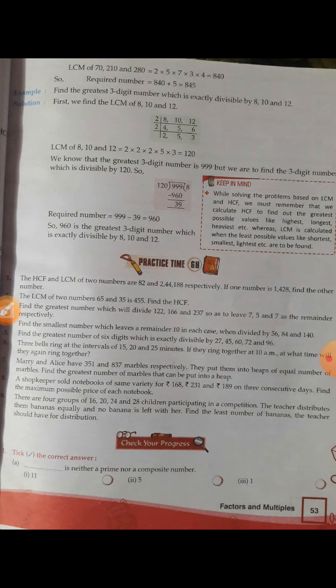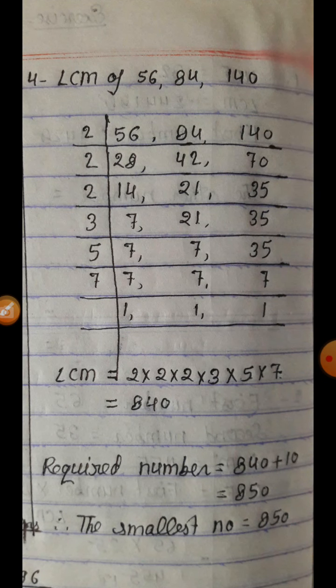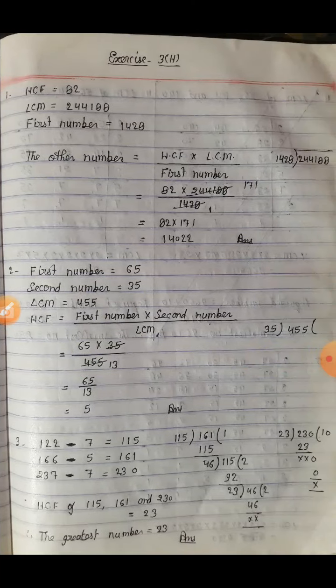Question number 4: Find the smallest number which leaves a remainder 10 in each case when divided by 56, 84, and 140. Smallest number के लिए LCM find करते हैं। LCM of 56, 84, 140 = 840. कहा है कि remainder 10 आता है, तो 840 + 10 = 850. Answer is 850.